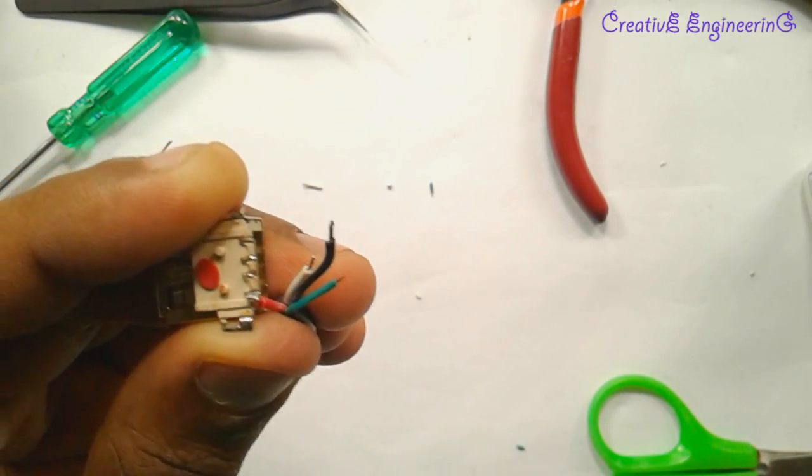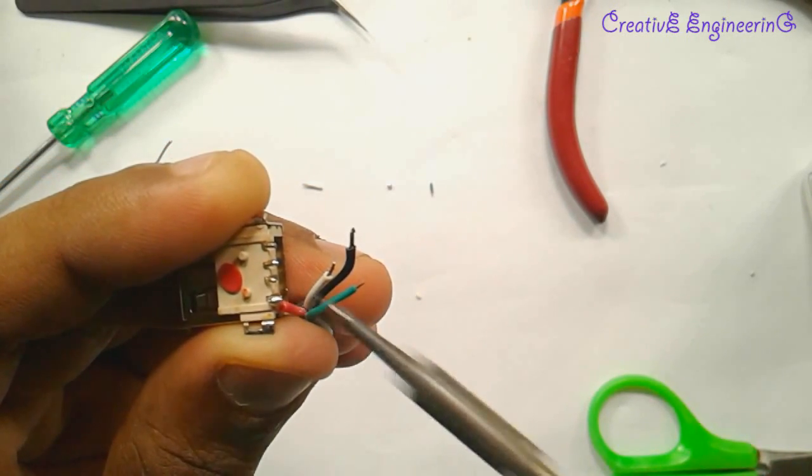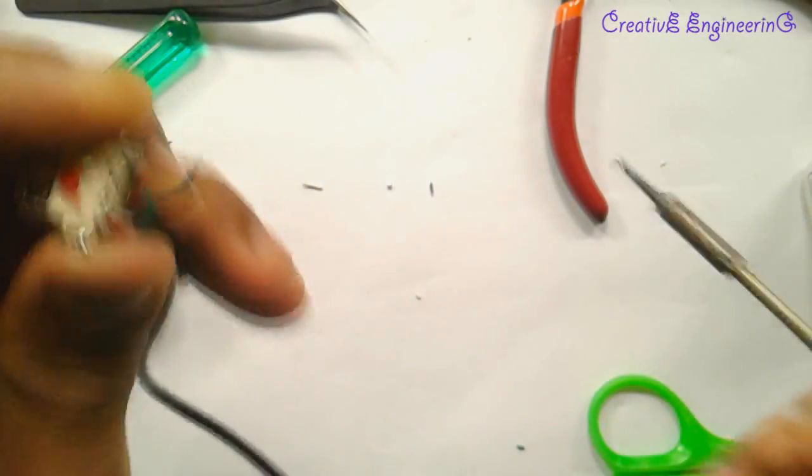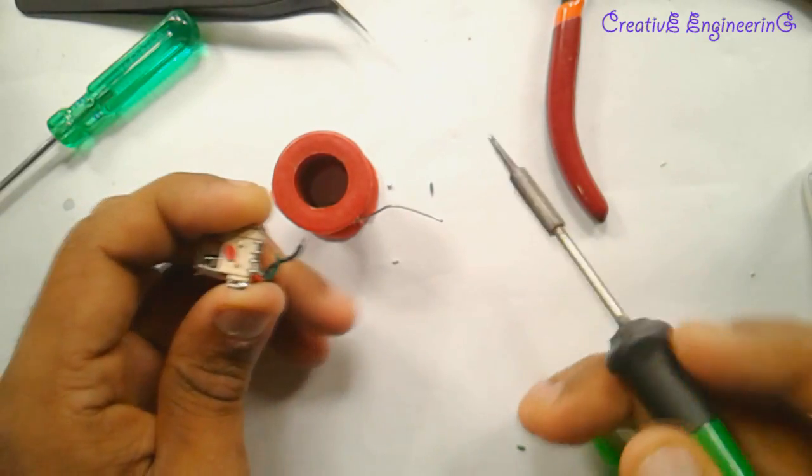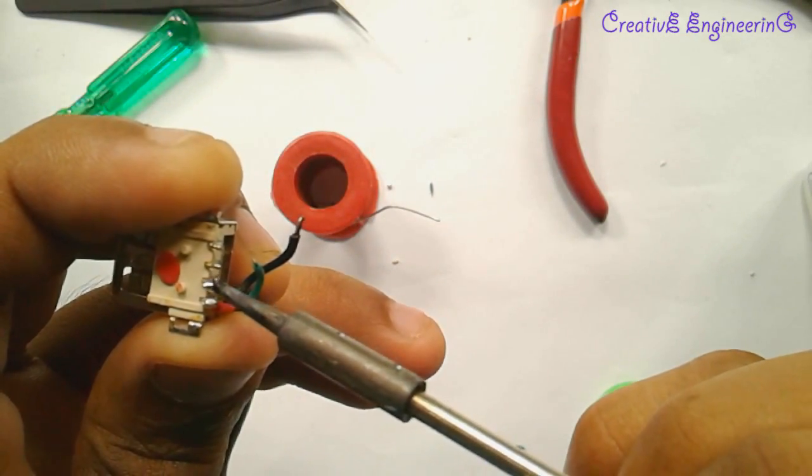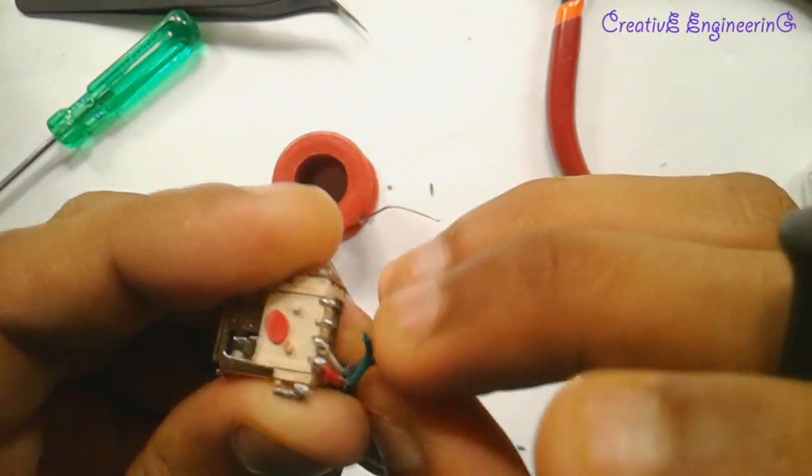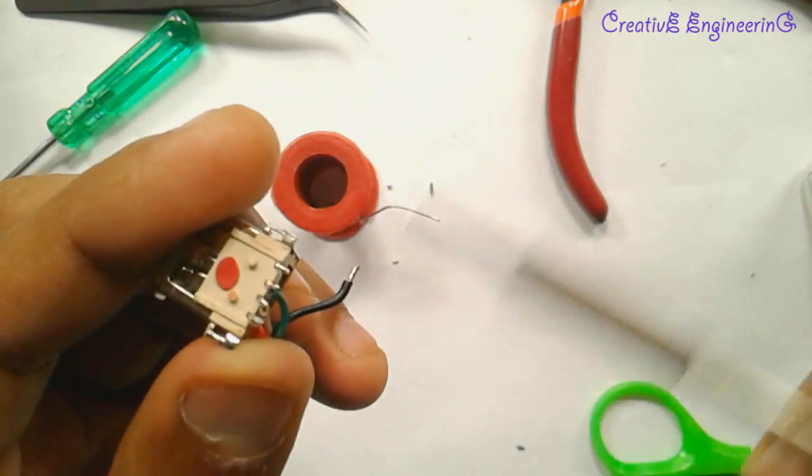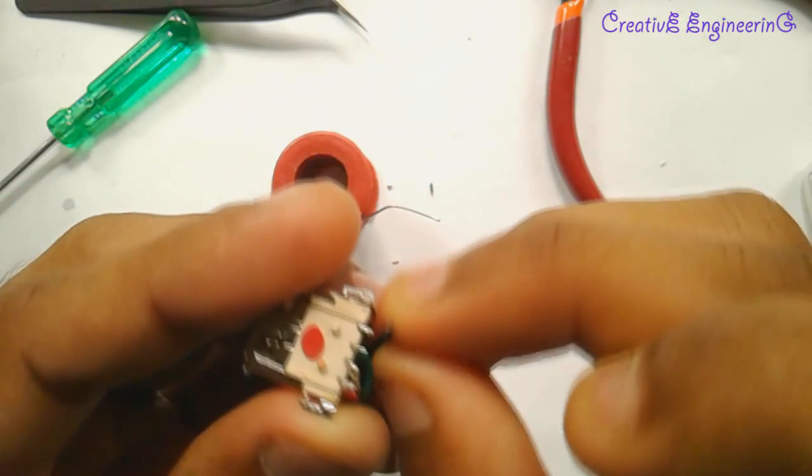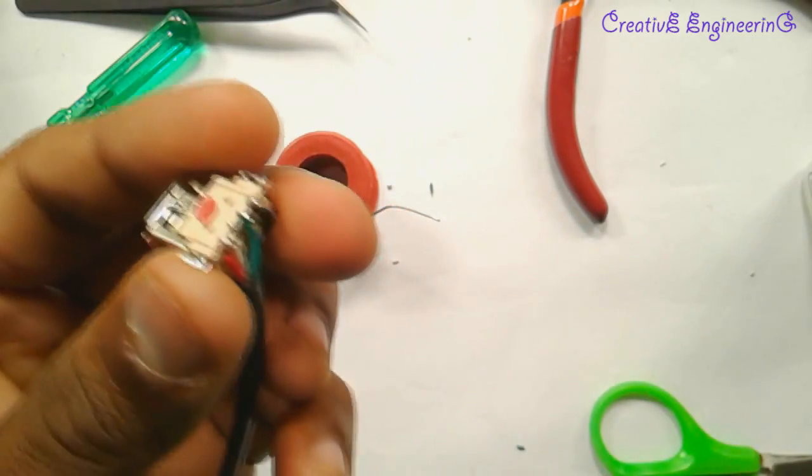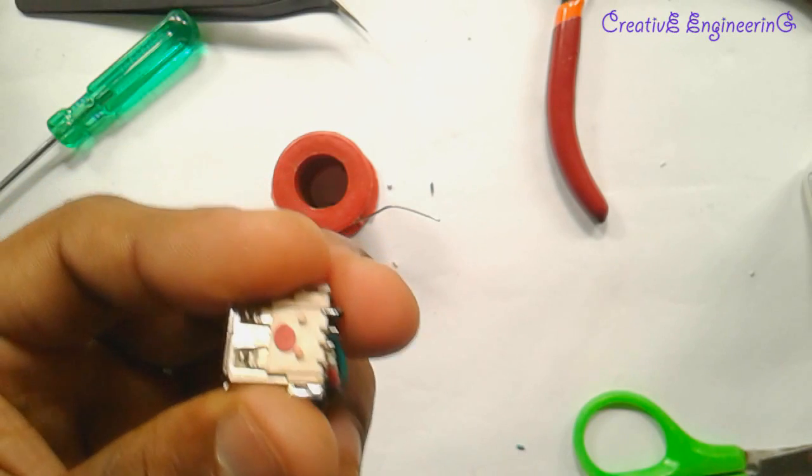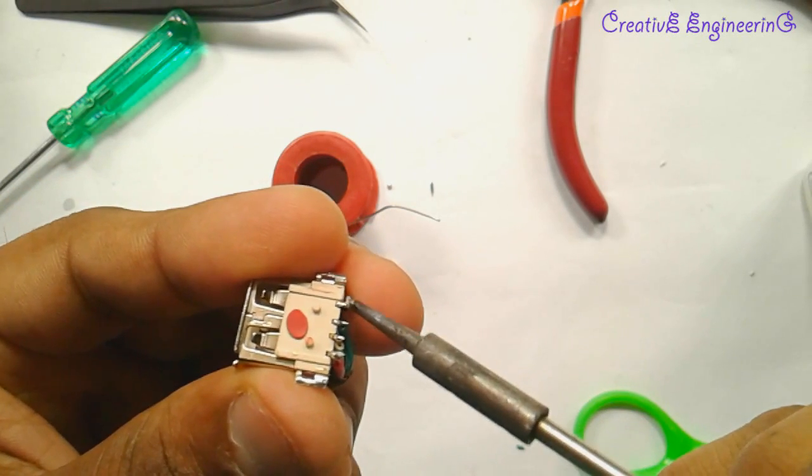Now next I connect the D-minus, that is the white wire. That is the D-plus pin. Finally the ground connection. I solder the ground wire to the ground pin.